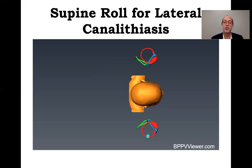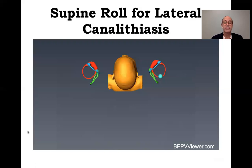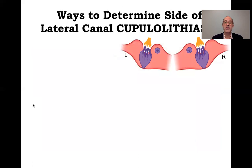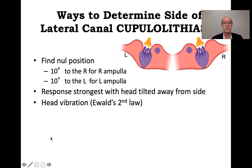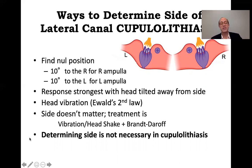When we do the supine roll test, turning toward the affected ear maximizes stimulation toward the cupula — giving greater duration of response — while turning away gives a weaker inhibitory response. This is one of the reasons we need to keep going for at least four turns before deciding the affected side. For cupulolithiasis, we want to orient the cupula vertically to find the null position — about 10 degrees to the right for the right ampulla, 10 degrees to the left for the left. For lateral cupulolithiasis, finding the side doesn't really matter because we treat it the same way: head vibration and Brandt-Daroff exercises afterward.